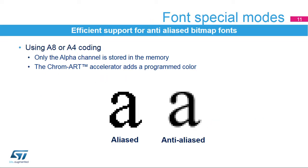Specific modes can be used to efficiently manage texts and fonts. Only the transparency value is stored in memory for rendering anti-aliased fonts. The color is added during the pixel format conversion process and can be programmed by the user. These modes are very efficient for storing high-quality bitmap fonts.